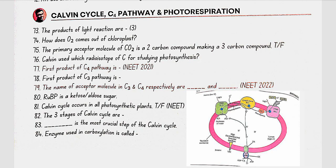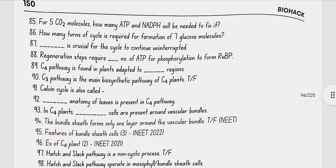The enzyme used in carboxylation is RUBISCO. For 5 CO2 molecules, 15 ATP and 10 NADPH are required, because for 1 molecule of CO2, 3 ATP and 2 NADPH are needed. For formation of 7 glucose molecules, 42 turns of the cycle are required (6 turns per glucose). Regeneration of RuBP is crucial for the cycle to continue, requiring 1 ATP per phosphorylation step.